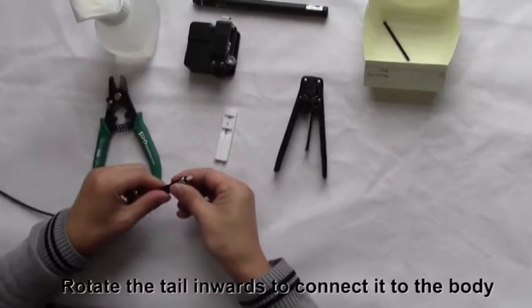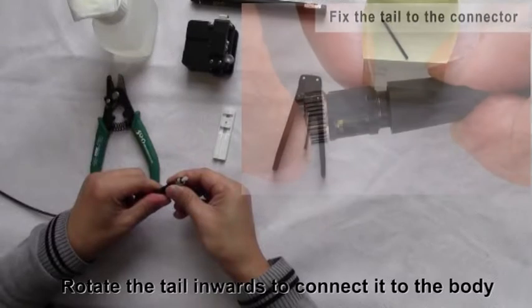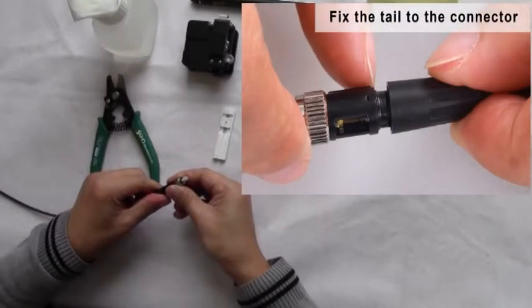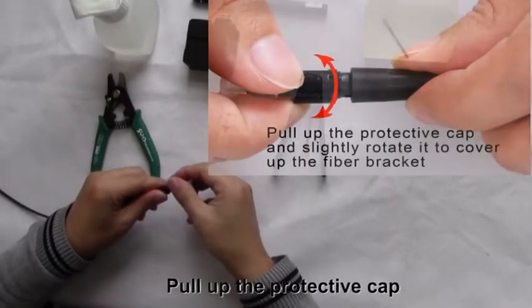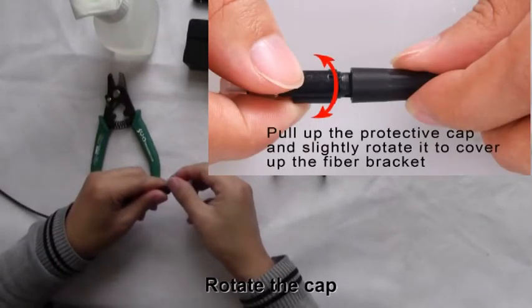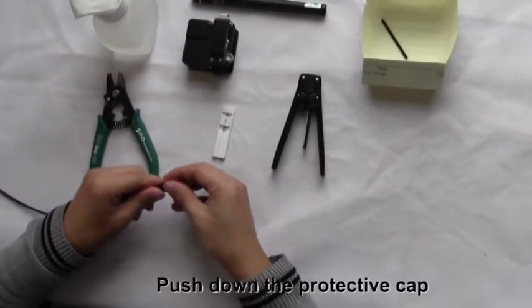Rotate the tail inwards to connect it to the body. Pull up the protective cap, rotate the cap, then push down the protective cap.